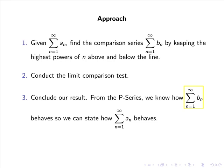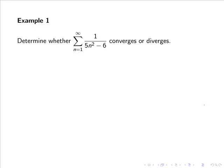If the series of bn converges, then that means that the series of an converges once the limit comparison test gives a positive and finite answer. So let's determine whether the series from 1 to infinity of 1 over 5n squared minus 6 converges or diverges. We use 1 over 5n squared minus 6 as our an term. For bn, we keep the highest powers of n above and below the line: above the line the highest power is n to the 0, simply a constant 1, and below the line the highest power is n squared. So our comparison series bn is 1 over n squared. From the p-series with p equals 2, which is greater than 1, we know that the series from 1 to infinity of 1 over n squared converges.